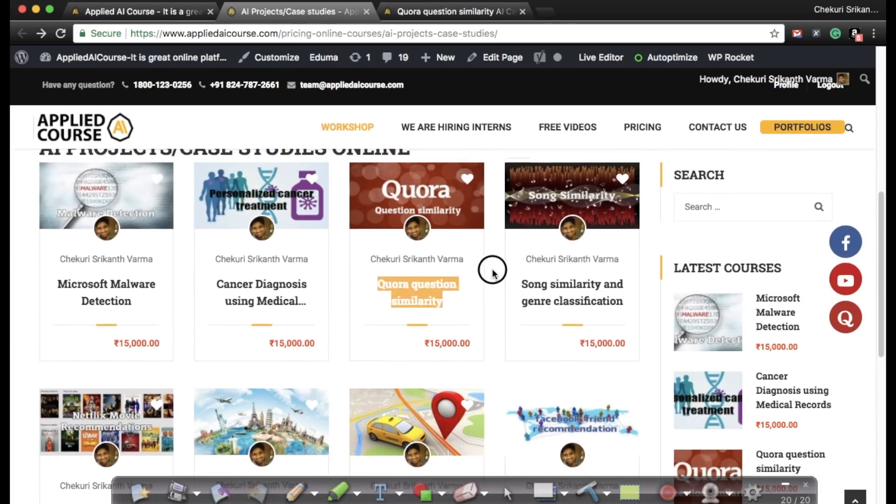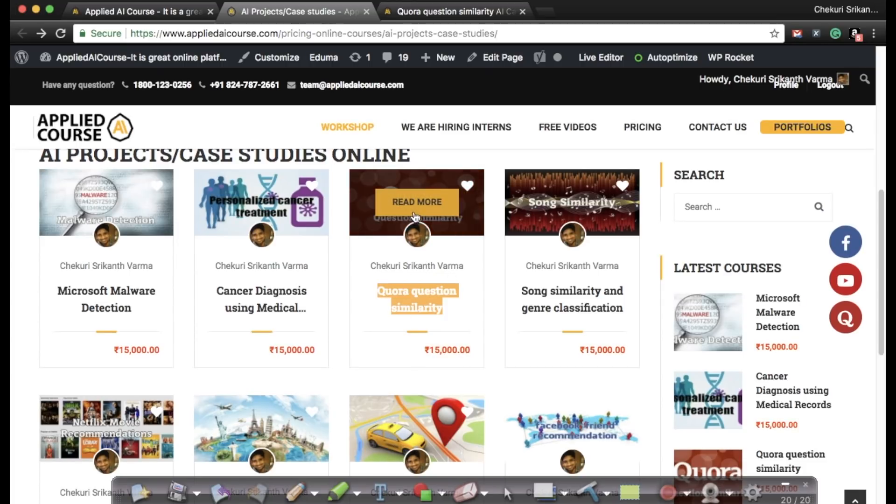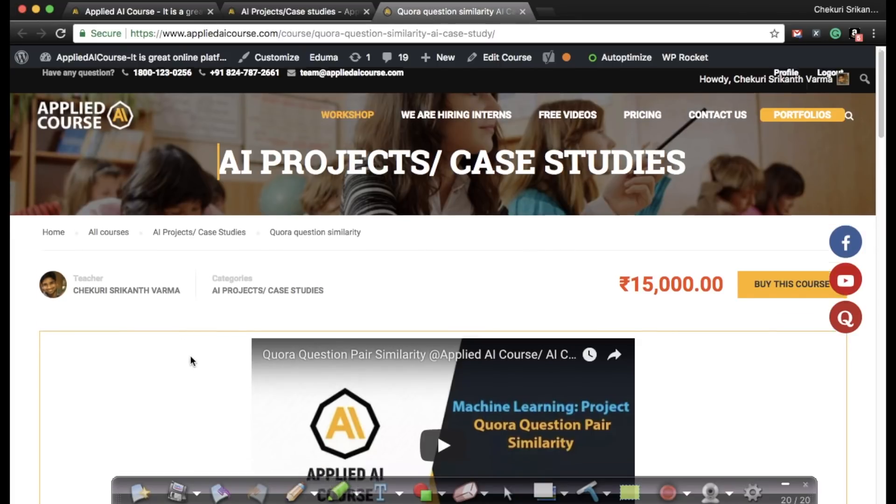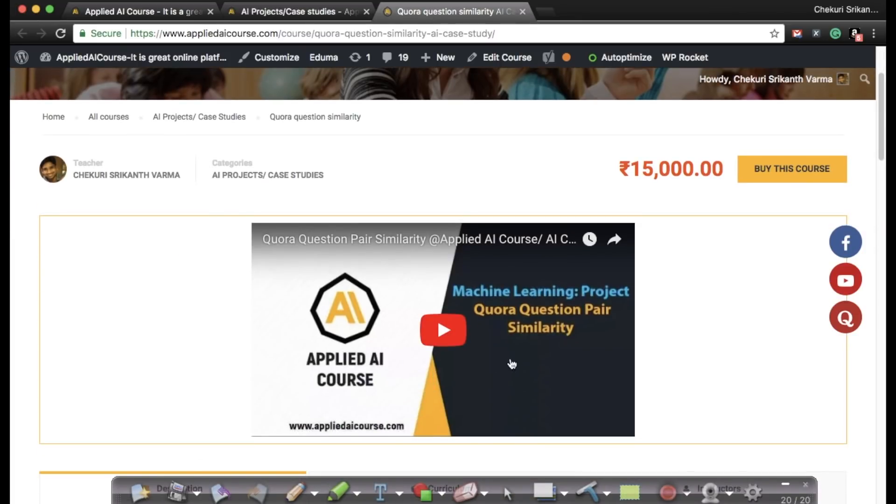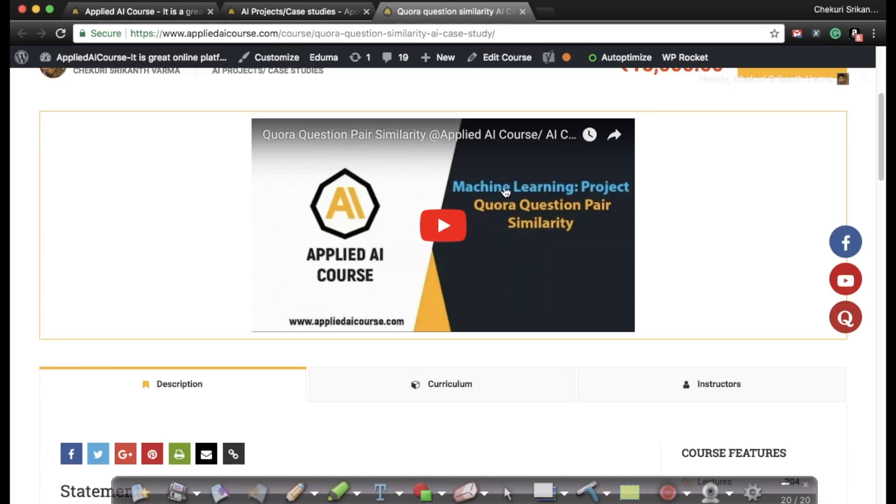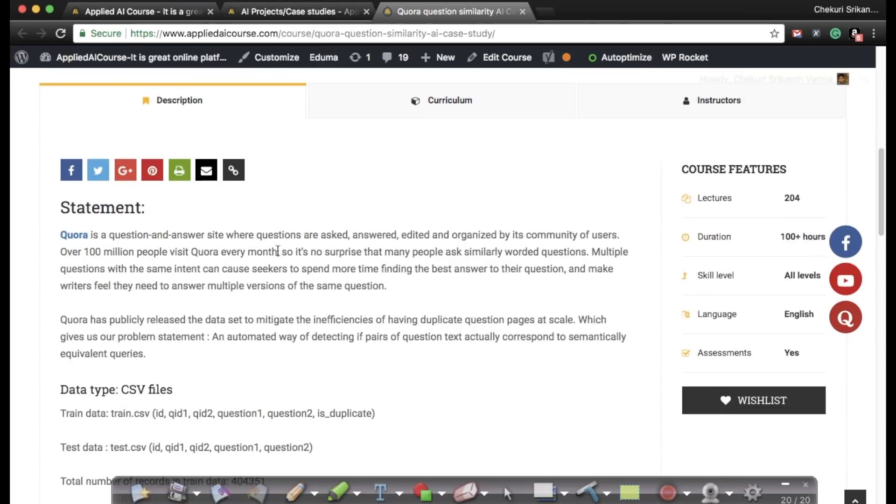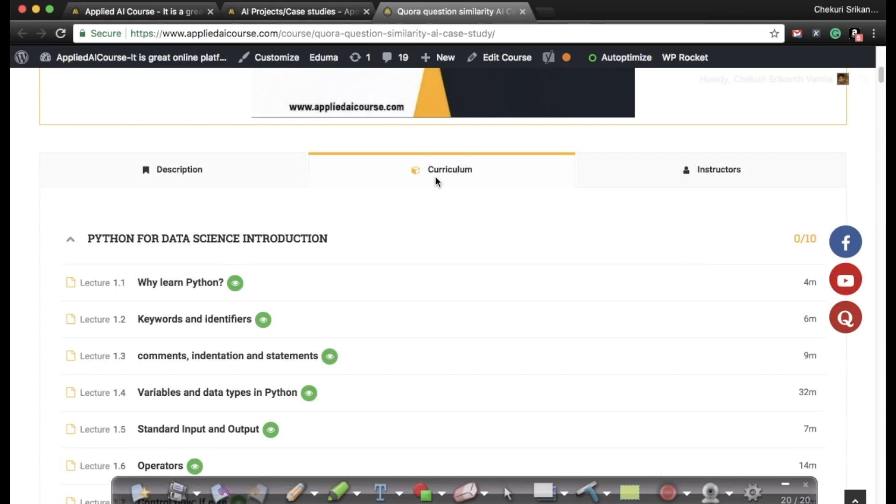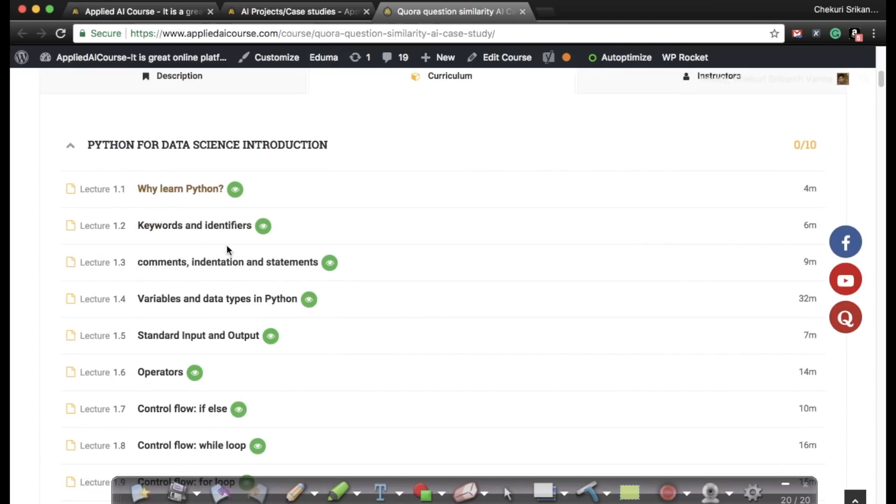For each of these problems, for example, if you are interested in Quora Question Pair Similarity, you can just go and click Read More. When you click Read More, it will open a page like this where you have a short video explaining what the whole project is all about. In short, we will give you a description of what the project is with a clear statement of what is the problem definition. Of course, you have all the core curriculum here. Some of these videos are free.